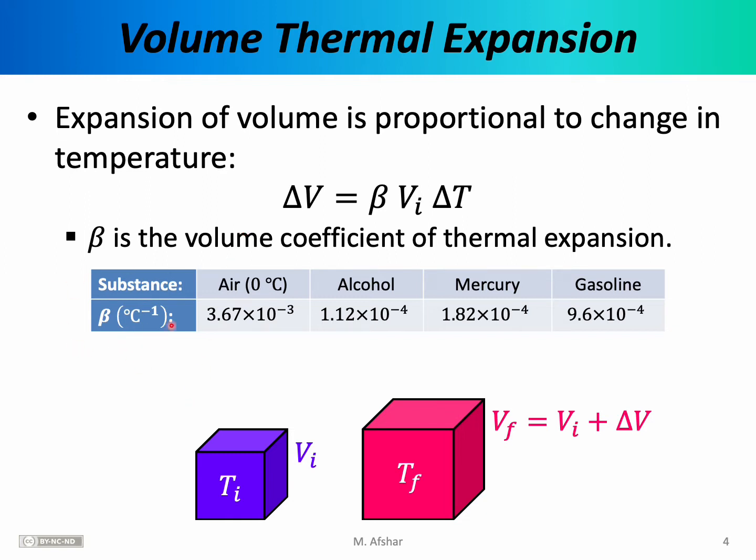Here I'm giving you the coefficient of thermal expansion for several other materials. Notice that thermal expansion does not apply just to solids. Air also expands and its beta is 3.67 times 10 to the minus 3. Liquids like alcohol, mercury, and gasoline can also expand and each one of those materials has its own volume coefficient of thermal expansion.